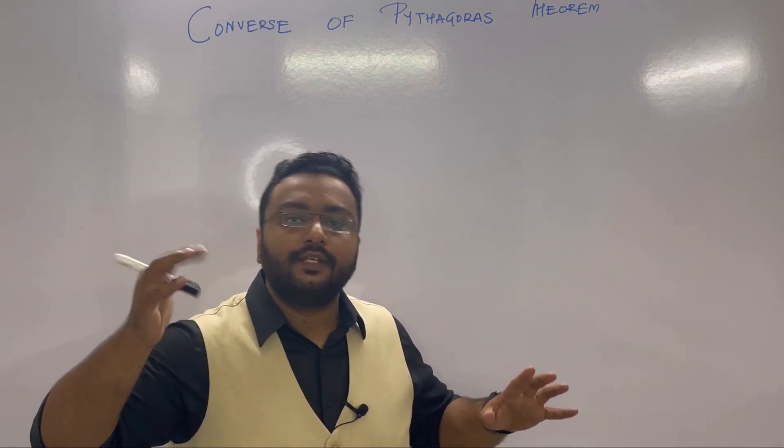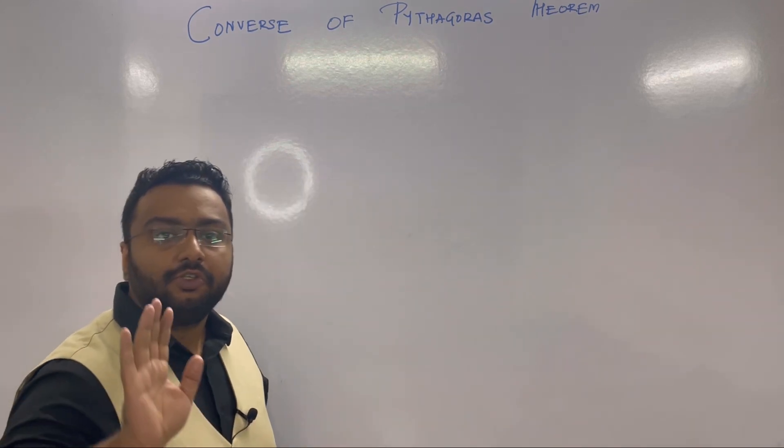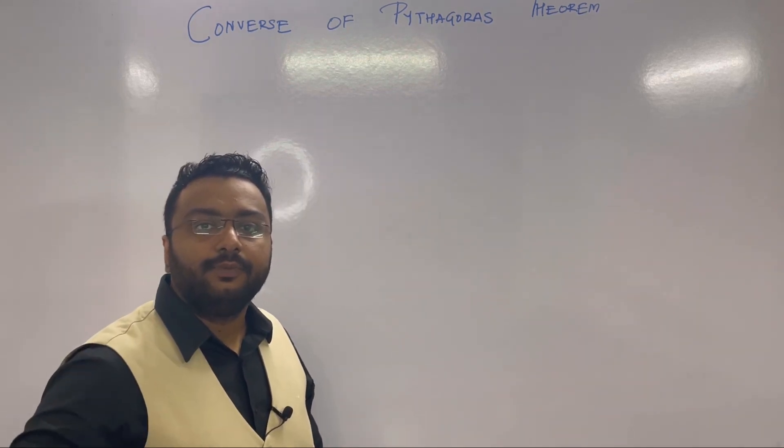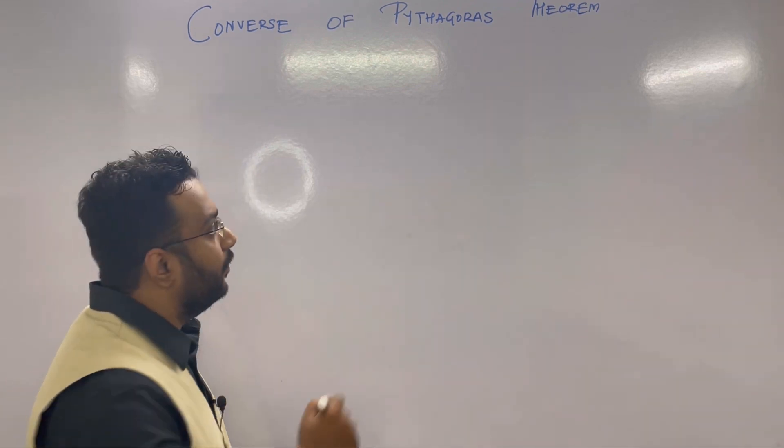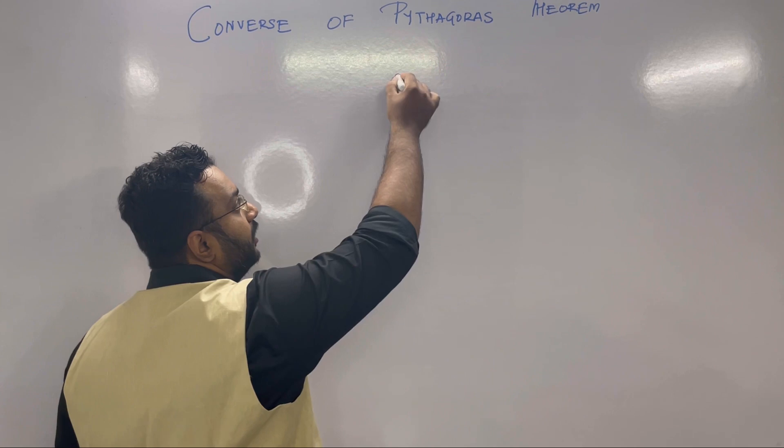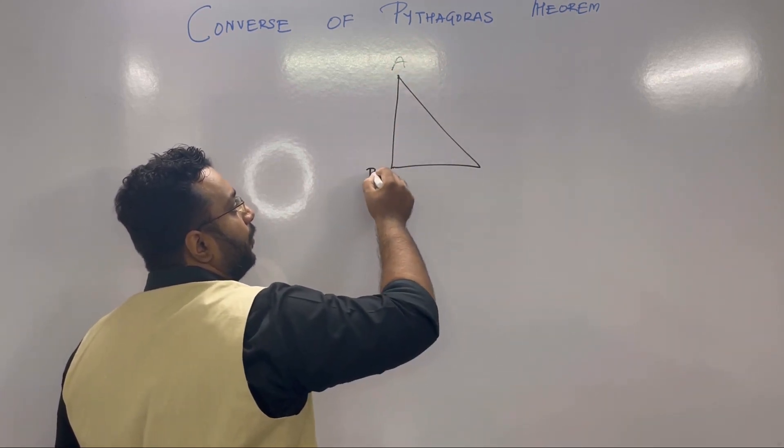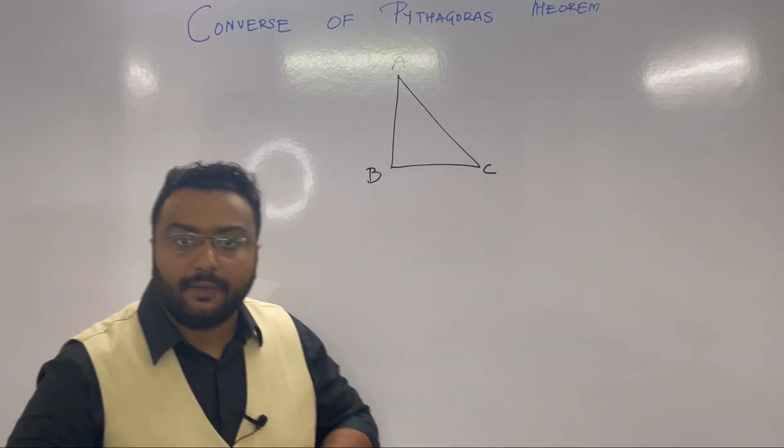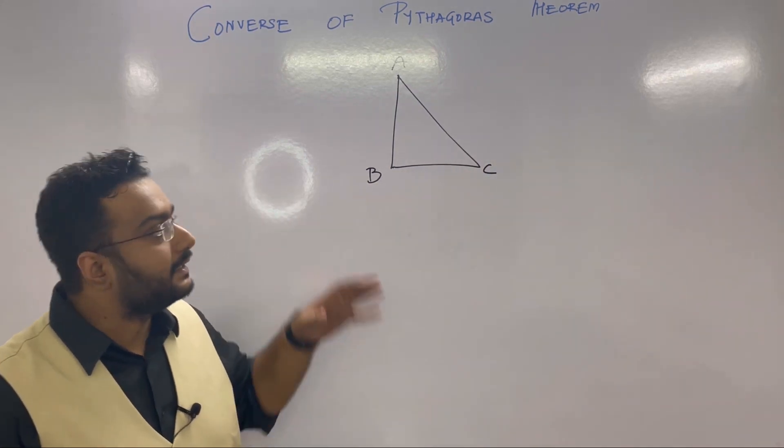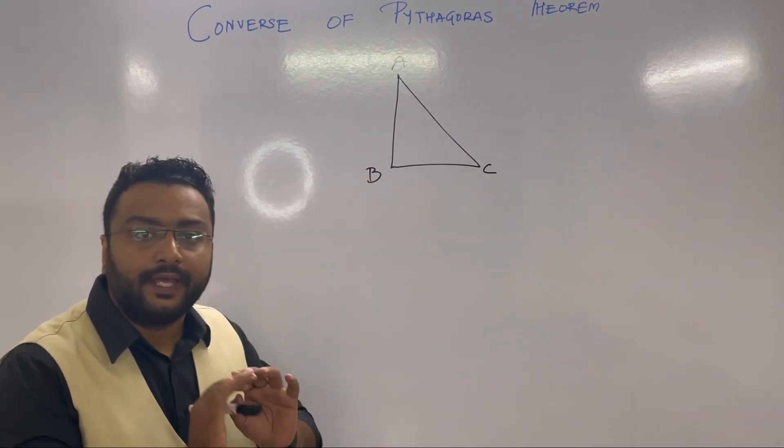Now, since you need to prove an angle to be 90 degrees, that means in the figure we will not draw the 90 degree mark. In a figure, we always draw only the given part. So let's draw a normal triangle here. We need to prove this is 90 degrees, but if you observe, I have not marked the 90 degree angle. Why? Because that's what we need to prove.